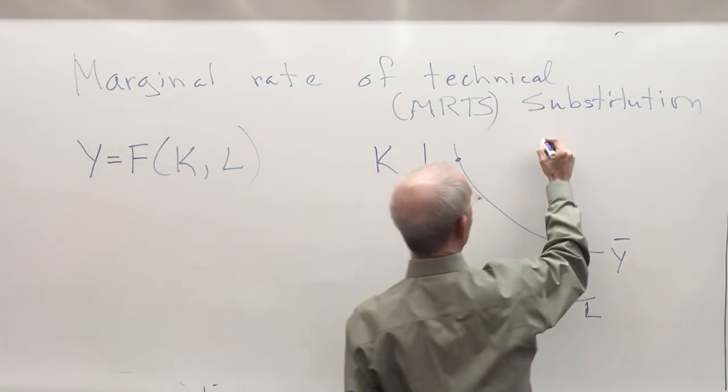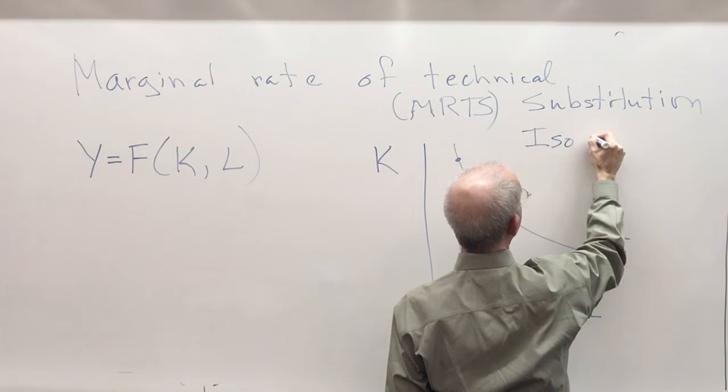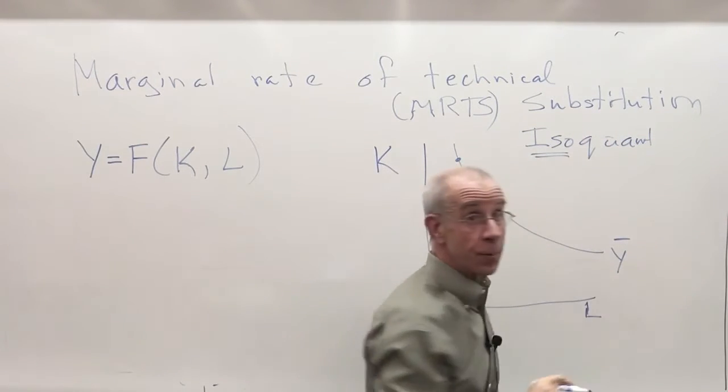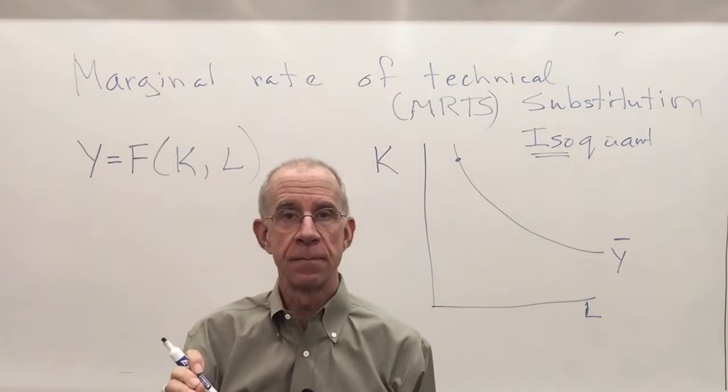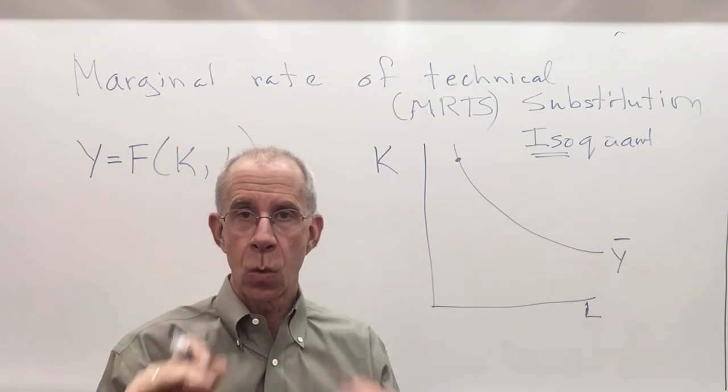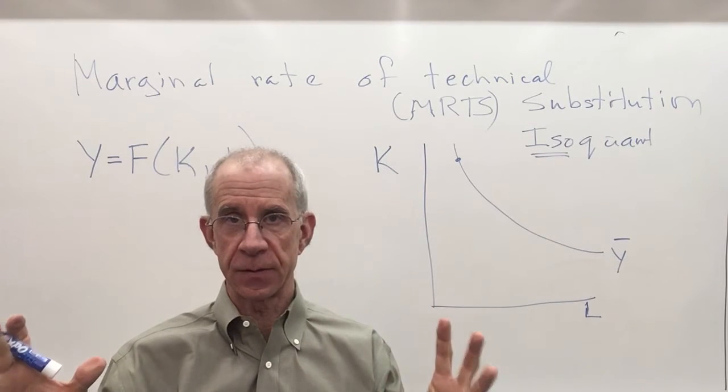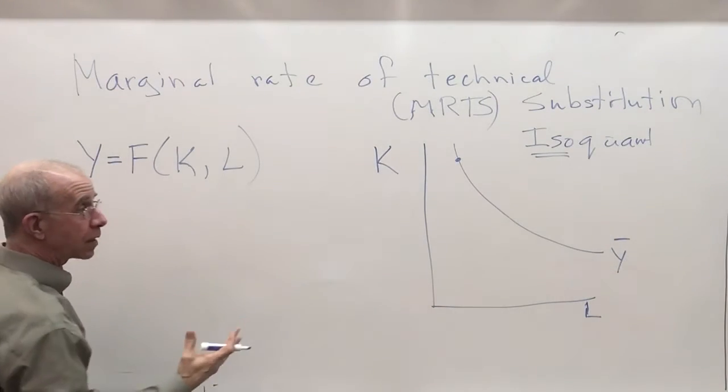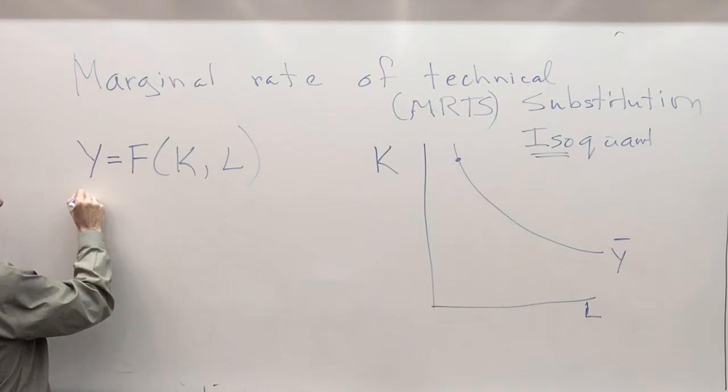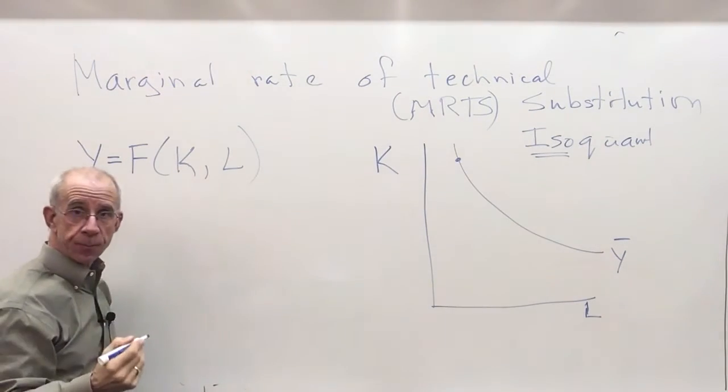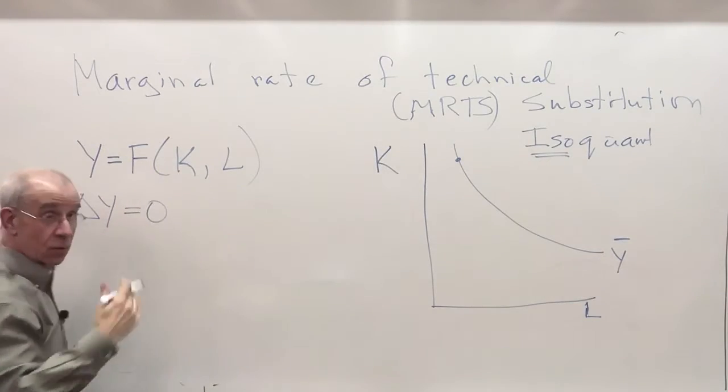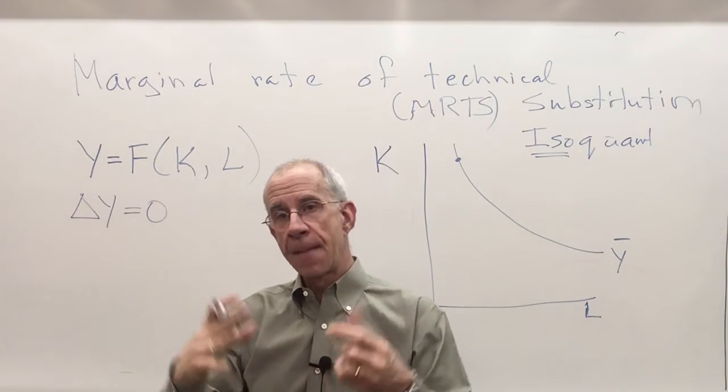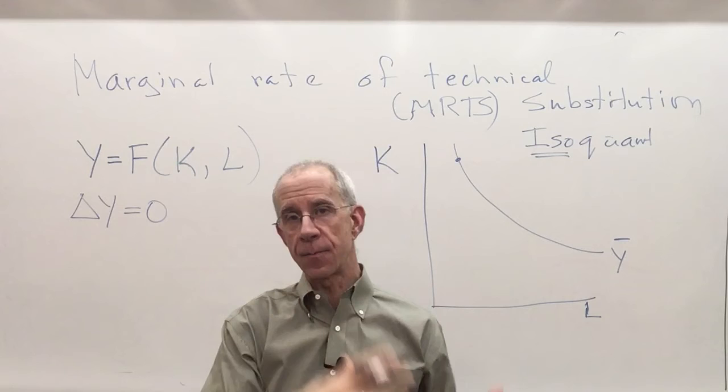Now, one thing about an isoquant, iso means the same, so isoquant means the same level of output. We're holding output fixed with different levels of use of capital and labor. So when we talk about an isoquant, we're talking about a situation where the change in output of Y is going to be zero. That's really the whole point, is that we're holding output fixed. How is it that output can change?